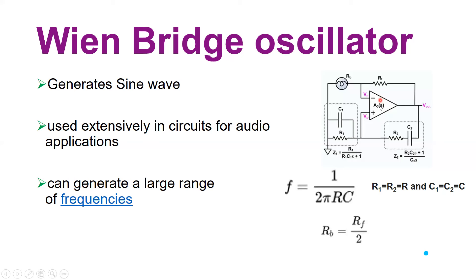The circuit consists of a linear amplifier — the operational amplifier — with a negative input pin Vn and a positive input pin Vp. The output is fed back through resistor Rf to the negative pin, and another resistance Rb is connected to ground. This forms the negative feedback loop, because the output is being fed to the negative input pin of the op-amp.